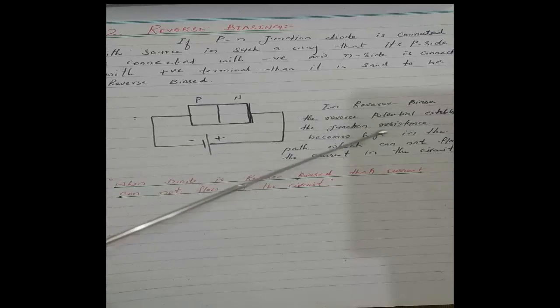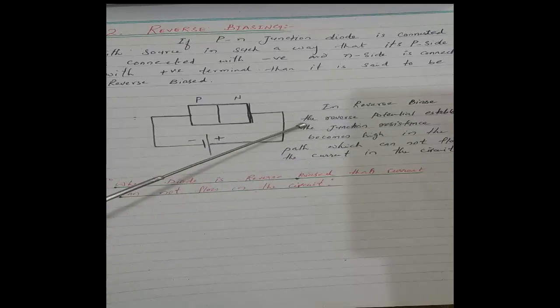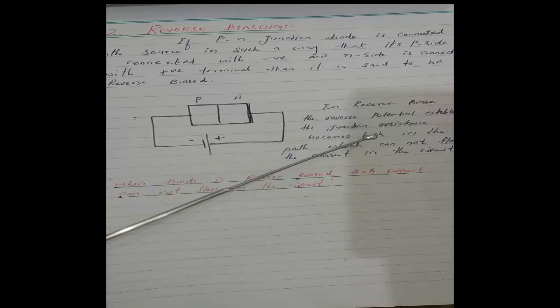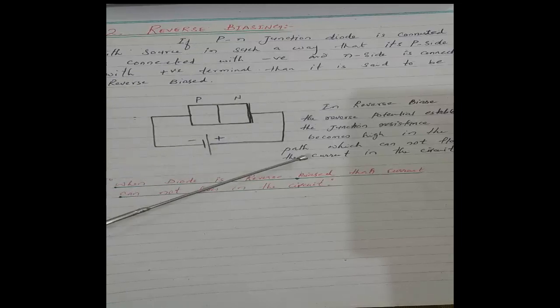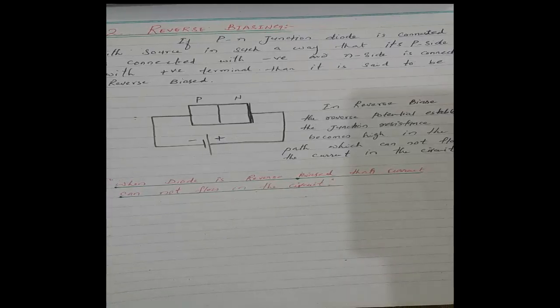In reverse biasing, the reverse of potential established in the junction makes resistance become high. यानि जब हम reverse bias करते हैं तो p-n junction के अंदर जो resistance है वो increase हो जाता है, जिसकी वजह से current circuit के अंदर move नहीं कर सकता। When diode is reverse biased, current cannot flow in the circuit। Forward biasing के अंदर current move करेगा, reverse biasing के अंदर current move नहीं करता।